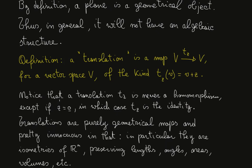Notice that a translation Tz is never a homomorphism except if z equals zero, the zero vector, in which case Tz is just the identity.